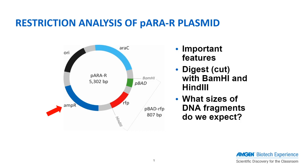The ampicillin resistance gene is shown in dark blue. This gene confers resistance to the antibiotic, meaning that all cells that take up the plasmid with this section of DNA can grow in an environment that contains ampicillin. This is an especially important selection mechanism that is widely used in cloning to help specifically select cells with the correct DNA fragments required to express the gene of interest.